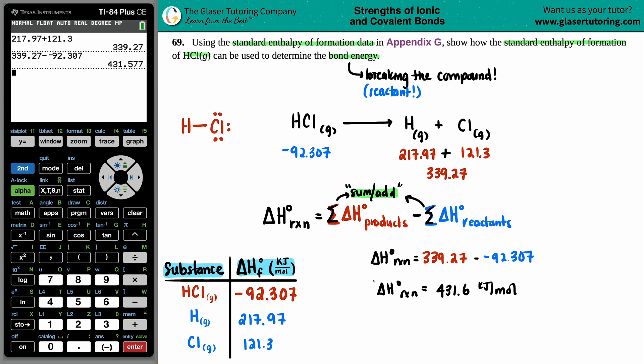So in this case, the delta H is the bond energy. So we can just say BE, the bond energy of HCl gas is 431.6 kilojoules per mole. Let's box it off. And that's it. Let's do that. And I think we're good to go. What do you think?